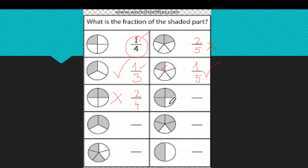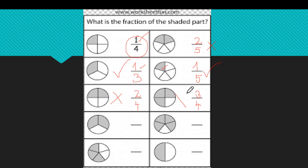How many equal parts do we have in this circle? Four equal parts. How many are shaded? One, two, three — three are shaded. Is this a unit fraction? No, it is not, because it has three parts shaded, not one.